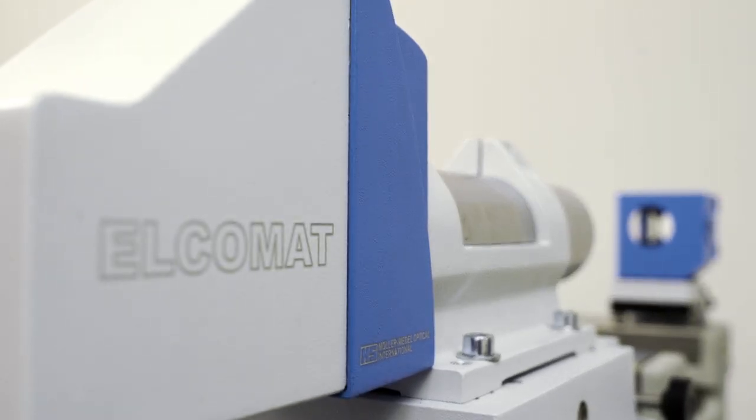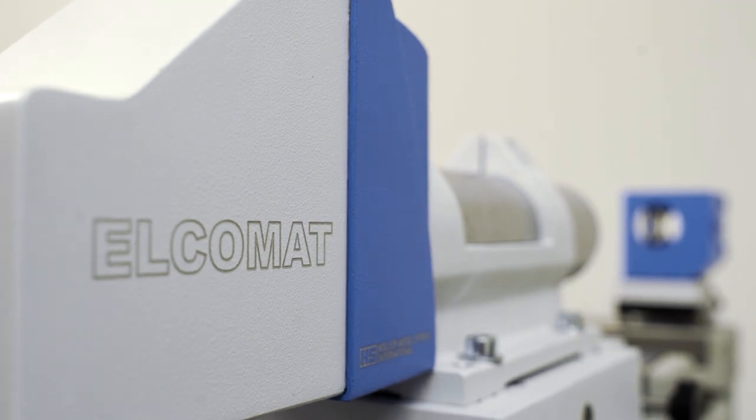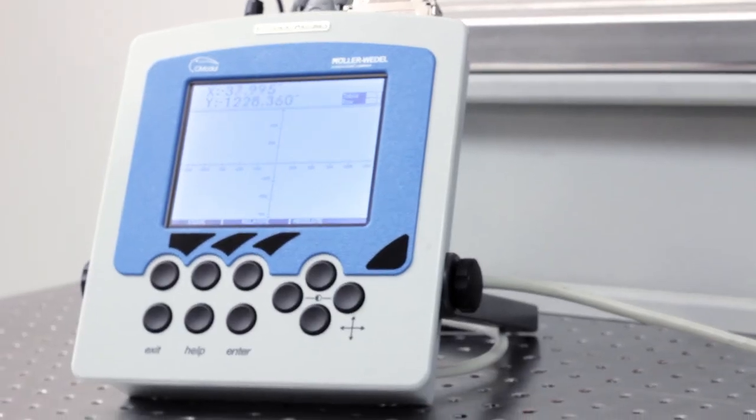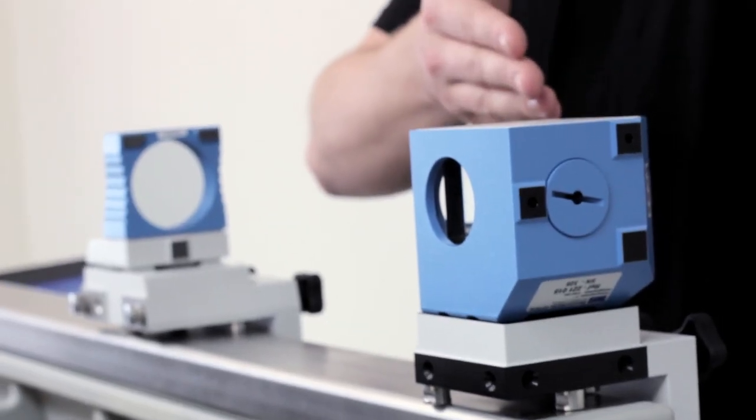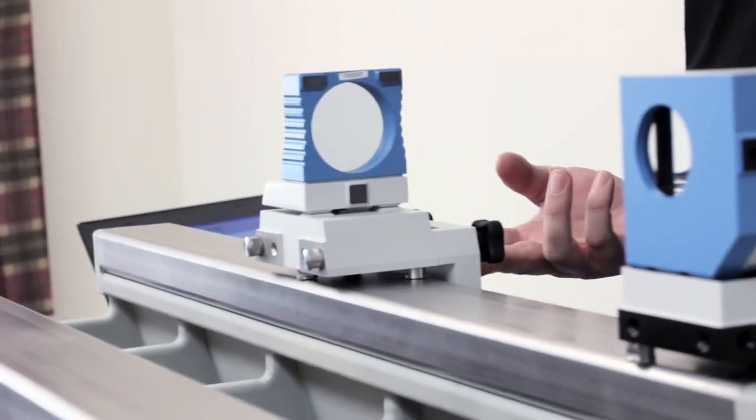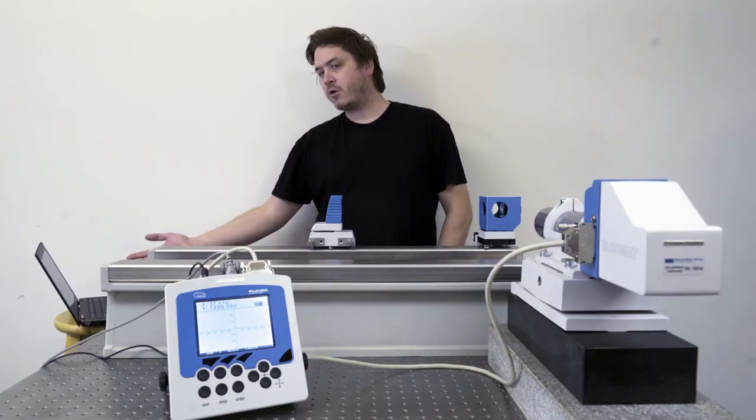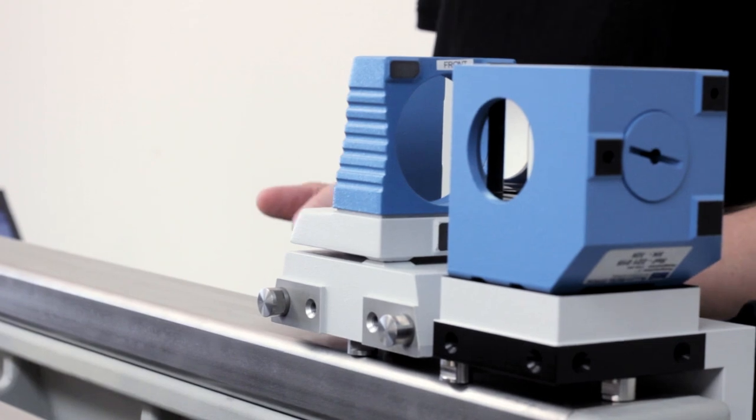The tools I'm going to be using today are the Elkomat 3000 electronic autocollimator with display head, a pentaprism to turn the beam path 90 degrees, a 100mm base length mirror, and the Elkowin measurement software.